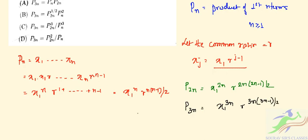Now, the first option is given as P_n multiplied by P(2n). If we multiply these two, it will be X_1^(3n) · R^(n(n-1)/2 + 2n(2n-1)/2), which simplifies to X_1^(3n) · R^(n/2 · (n-1 + 4n-1)).